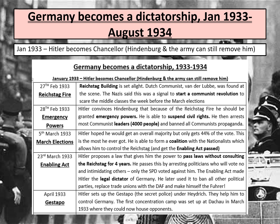Now we're going to think about the first key area: how Germany becomes a dictatorship by August 1934. Hitler was chosen as Chancellor on 30th January 1933 - an important position because it meant he was in charge of day-to-day government, but he could still be removed at any point by President Hindenburg or the army. So Hitler got to work immediately trying to establish a dictatorship, partly through skill and partly through luck. It's important that you understand what happened in each event but also why each step helped him become a dictator.